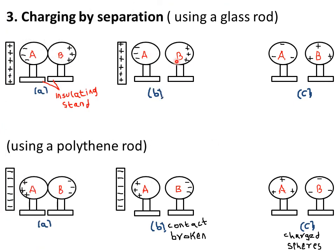Lastly, we look at charging a sphere by separation method. As the word suggests, we start with the spheres in contact and then separate them at the end. The apparatus required are: two metal spheres A and B with insulating stands — insulating stands prevent gaining or losing electrons from the earth — a polythene rod, a woolen cloth, a stand, and a thread.